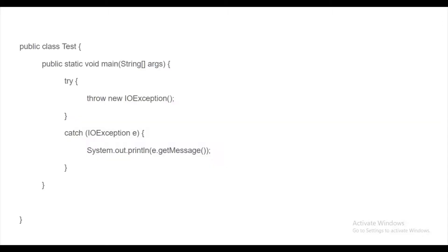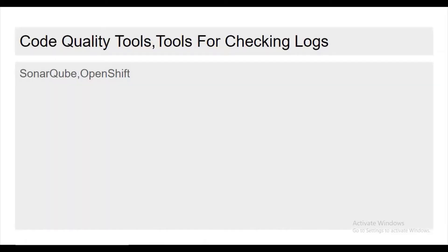The interviewer gave me a code snippet with a try-catch block. In the try block, an exception is thrown and caught in the catch block, where we call e.getMessage(). Many people assume there might be a NullPointerException, but the answer is null. Since no message was passed to the exception constructor, getMessage() returns null — not a NullPointerException.